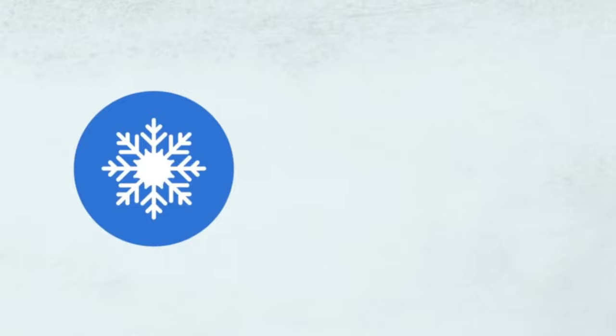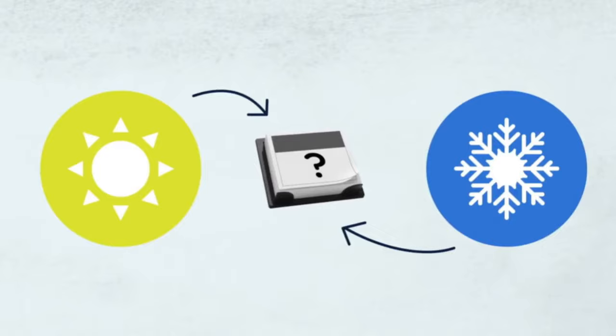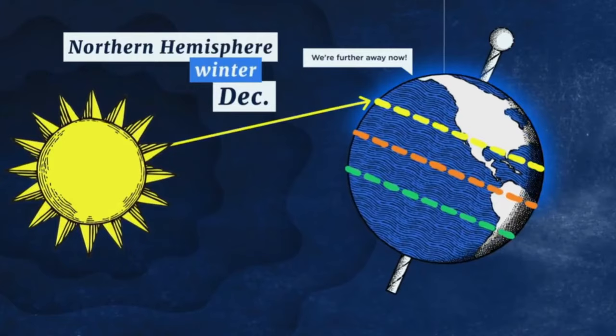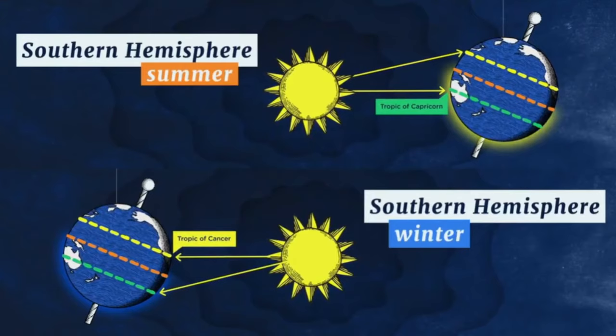But which solstice happens on which day depends on the hemisphere you live in. In the northern hemisphere, summer starts in June when the Sun is beaming directly over the Tropic of Cancer, while winter starts in December when the Sun shines down on the Tropic of Capricorn. This is flipped for the southern hemisphere, which is why Australians associate the new year with summer fun.